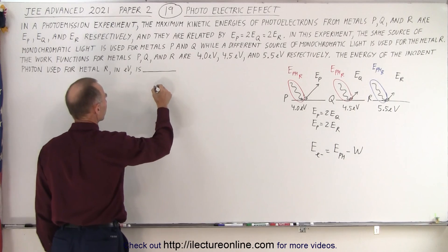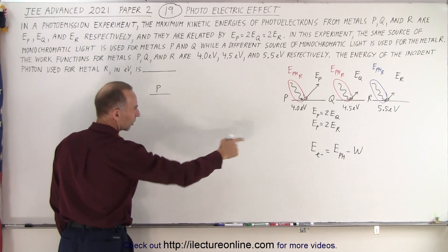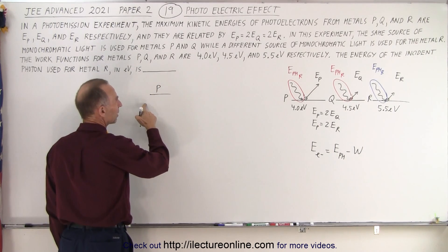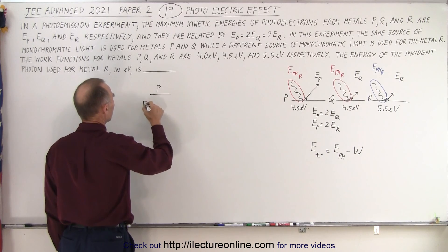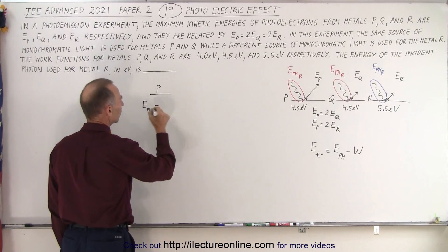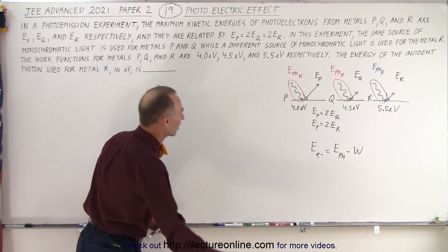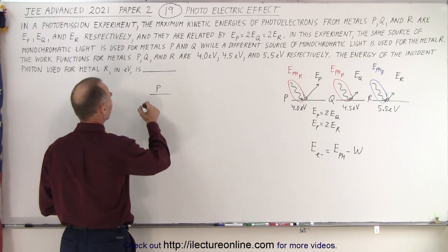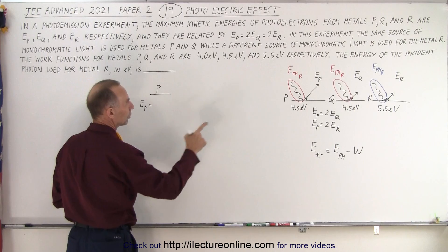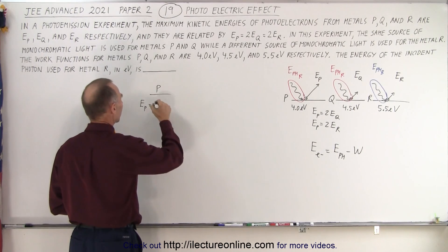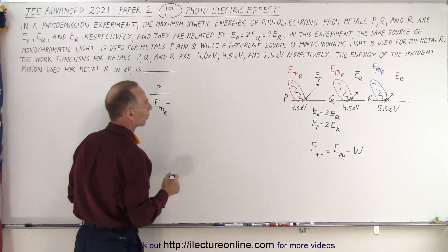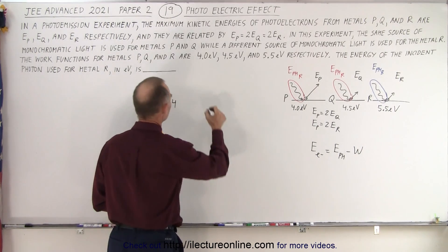Let's do it for metal p. The energy of the outgoing electron E_p equals the energy of the incoming red photon E_photon_red minus the work function, which is 4.